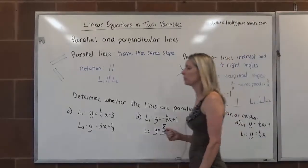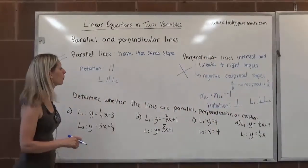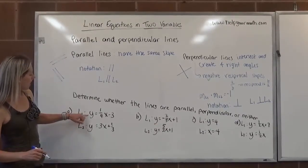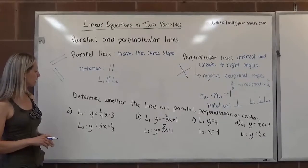Let's look at some examples. We want to determine whether the lines are parallel, perpendicular, or neither based on their equations. The first one, we have y equals one-fourth x minus three. Our second line is y equals three x plus one-third.